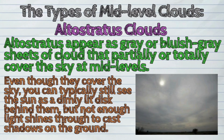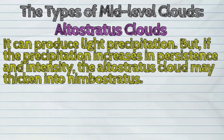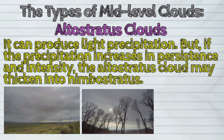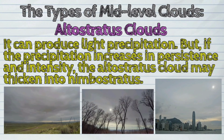Altostratus can produce light precipitation. But if the precipitation increases in persistence and intensity, the altostratus clouds may thicken into nimbostratus.